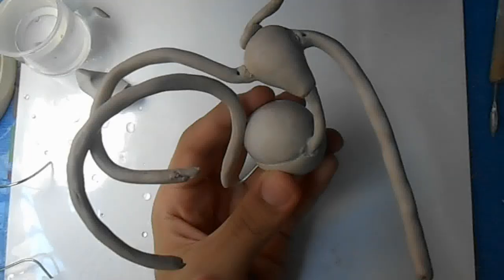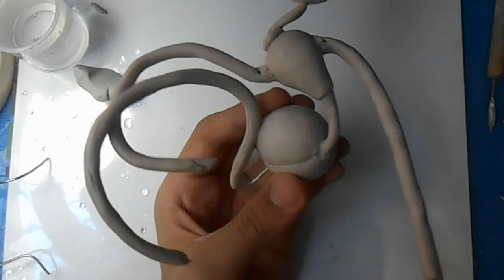After that, we will attach wires to the body to sculpt on them and make her limbs.